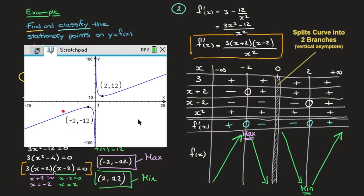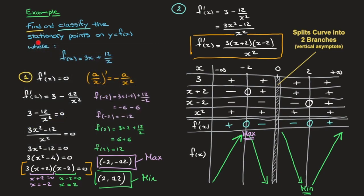Going back to the graph shown at the beginning, our results confirm everything we saw. The branch in the third quadrant increases, reaches a local maximum at (−2, −12), then decreases. The branch in the first quadrant decreases, reaches a local minimum at (2, 12), then increases. We now know how to find and classify stationary points on a curve by studying the sign of the first derivative.